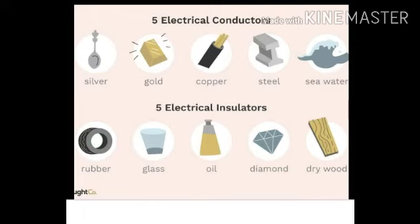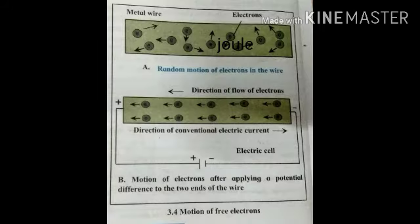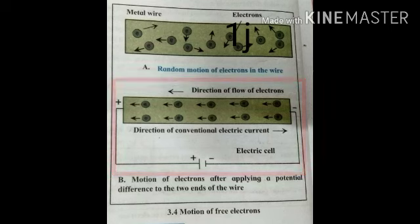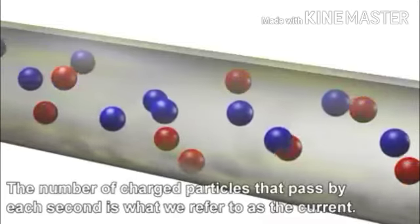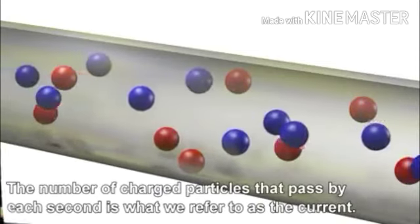Have you ever wondered why some elements conduct electricity and others do not? In your lower standards you studied that metals conduct electricity and non-metals don't. It is because metals have free electrons which can move easily in their outermost orbits, and non-metals don't have those free electrons. But these free electrons cannot move on their own because there should be a potential difference — a difference in the level of electrons at both terminals. Before we apply potential difference, electrons are just moving randomly. When the wire is connected to a battery, it gets a positive terminal and a negative terminal, and then the electrons start flowing from the negative terminal to the positive terminal, all in one particular direction. This is how electric current occurs.